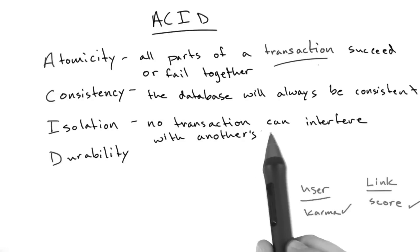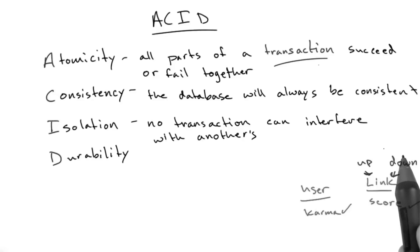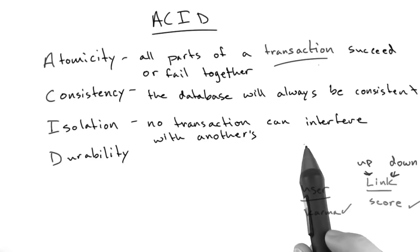So isolation refers to the notion that no transaction can interfere with another's. So let's say we have a link that is both getting two votes coming at the same time to increase the score of this link. That means we're going to be updating the link's score up and down and the user's karma up and down. And isolation refers to the notion that this upvote won't affect the computation of this downvote. If we were overwriting this link in our database, it would be a shame if the downvote was applied to the original link score before the upvote was applied because the net score change in here should be 0, but it could be negative 1 if these aren't handled properly. And so isolation refers to the notion that each transaction cannot affect other transactions.